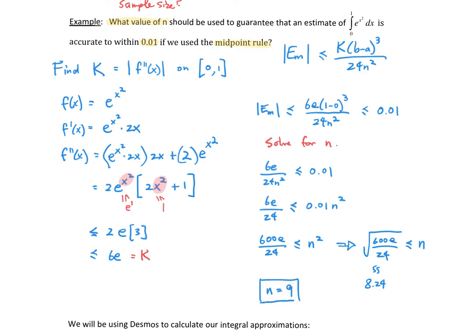If we only did n equals 8, we would be just short of our required accuracy. So this concludes our video on determining the sample size to be within a certain margin of error.